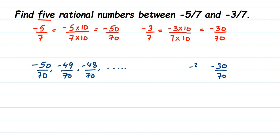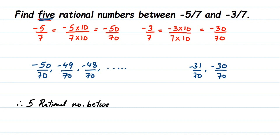From these numbers we can simply select any five rational numbers, since the question asks us to find five. We can pick any five rational numbers between -50/70 and -30/70 and write them down. There are infinitely many rational numbers between two rational numbers.